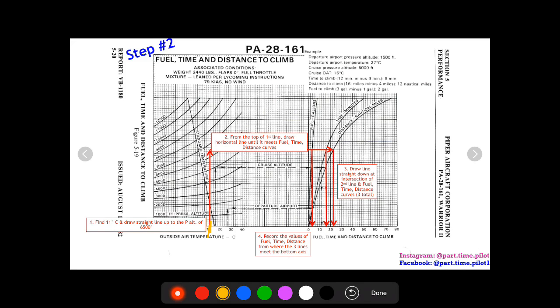Our cruise temperature is 11 degrees, so we find 11 degrees on this axis right here, we draw straight lines all the way up to 6500, which is going to be between the 7000 and the 6000 line, so right in the middle. Once we reach that point, we draw a horizontal line all the way over through these three curves, and then we draw three vertical lines down from the intersection of our horizontal line and these three curves for fuel, time, and distance.